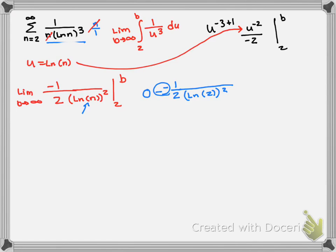These two negatives become positive and we have 1 over 2 ln of 2 squared. All I care is that this is finite, so we have a convergent series.